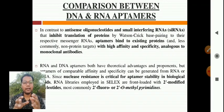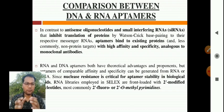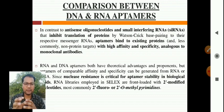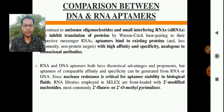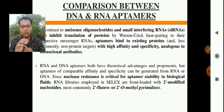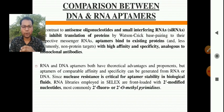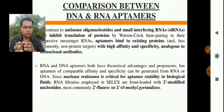In comparison between DNA and RNA aptamers: in contrast to antisense oligonucleotides and small interfering RNAs (siRNAs) that inhibit translation of proteins by Watson-Crick base pairing to their respective messenger RNAs, aptamers bind to existing proteins and, less commonly, non-protein targets with high affinity and specificity — analogous to monoclonal antibodies. Since nuclease resistance is critical for optimal stability in biological fluids, RNA libraries employed in SELEX are front-loaded with secondary modified nucleotides, most commonly 2'-fluoro or 2'-O-methyl pyrimidines.